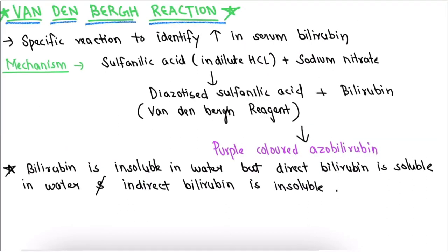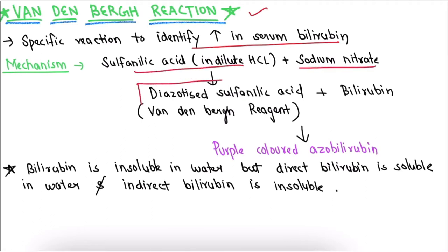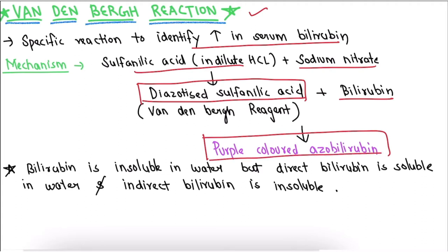Now coming to the most important topic — the Van den Bergh reaction. It is a specific reaction to identify the increase in serum bilirubin. The mechanism is: sulfanilic acid in dilute HCl plus sodium nitrite leads to the formation of diazotized sulfanilic acid, which is the Van den Bergh reagent. When this reagent reacts with bilirubin, it leads to formation of a purple-colored azo-bilirubin. We know that direct bilirubin is soluble in water and indirect bilirubin is insoluble in water.